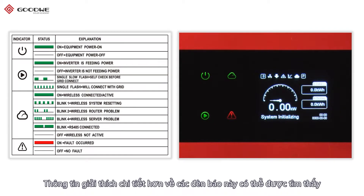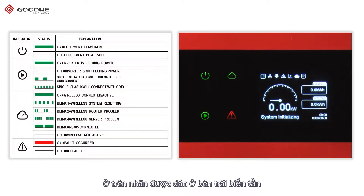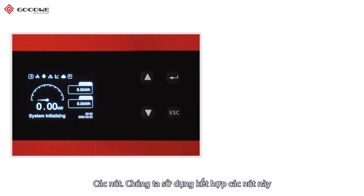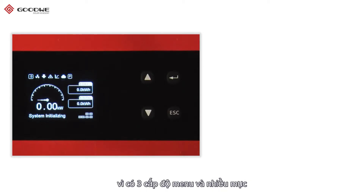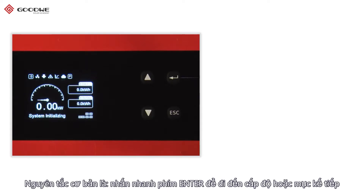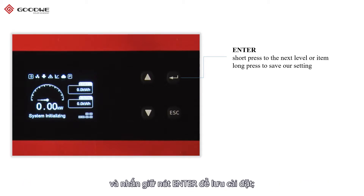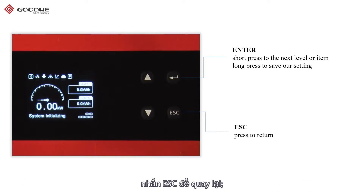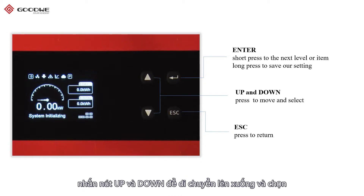More detailed explanation about indicators can be found in the label attached on the left side of the inverter. Buttons: we use these buttons in combination because there are three levels of menus and many items. The basic rules are: short-press Enter to go to the next level or item, long-press Enter to save a setting, press Escape to return, and press Up and Down buttons to move and select.